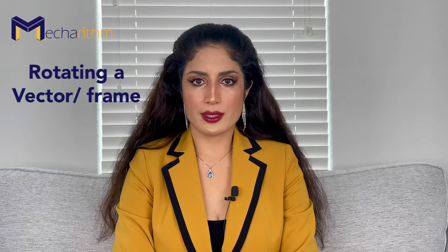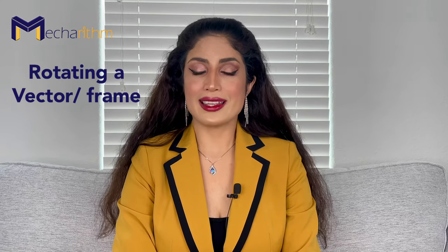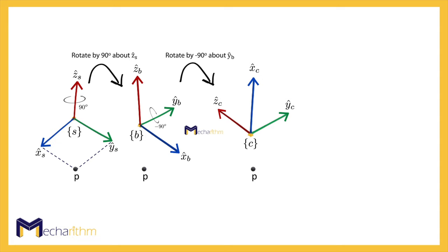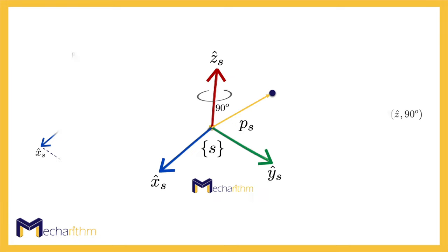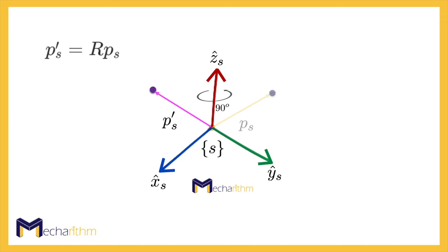Another application of a rotation matrix — the final one — is to rotate a vector or a frame. Here again, the rotation matrix is an operator that acts on a frame or a vector to rotate it. Consider the three coordinate frames S, B, and C that we saw earlier. B is achieved by rotating the S frame by 90 degrees about the Z axis of the S frame. RSB can also serve as an operator that rotates a vector or a frame by 90 degrees about the Z axis. Pre-multiplying PS by RSB doesn't follow the subscript cancellation rule, so the rotation matrix acts as an operator to rotate the vector PS by 90 degrees about the Z axis of the S frame.